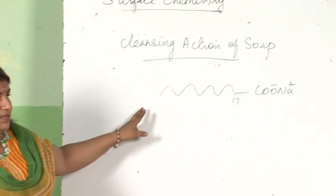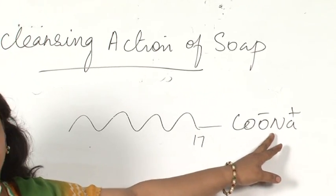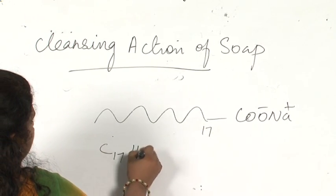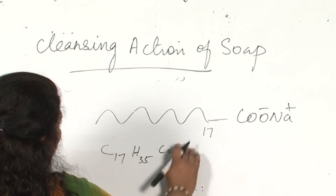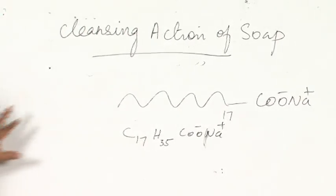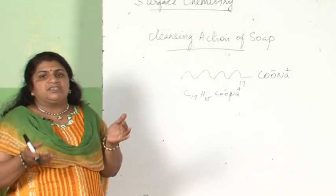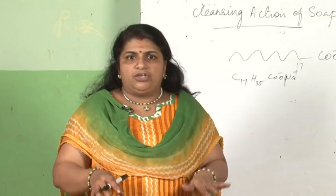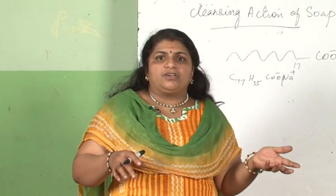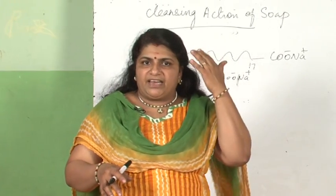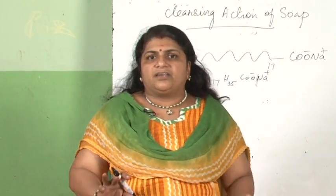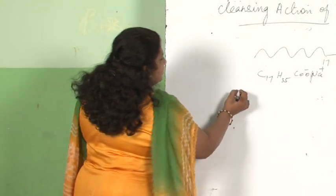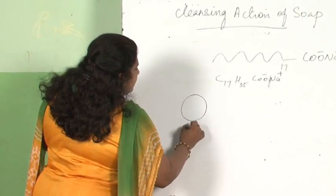Soap is a sodium salt of a higher fatty acid. Here I have written stearic acid, C₁₇H₃₅COONa. Suppose we have added soap in a bucket of water, agitated nicely, and then soaked our cloth. The cloth contains oil or grease — our hair also contains oil. We cannot see the oil droplet but it is there in the cloth. That oil droplet, which is an organic entity — oil or grease is an organic entity.